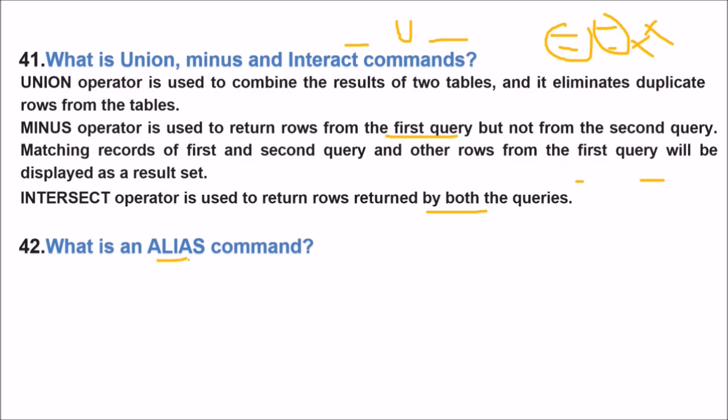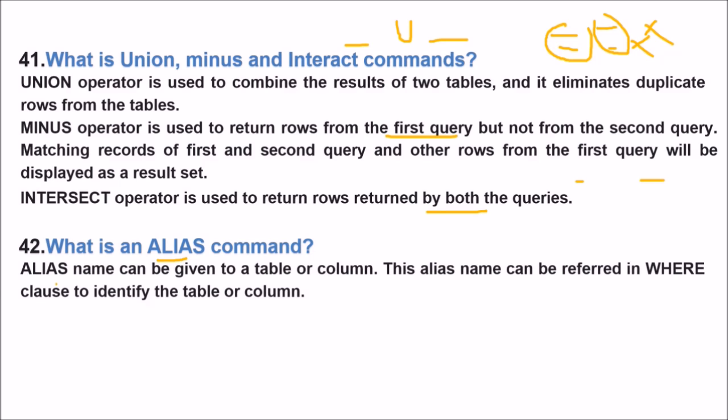What is alias? Alias is multiple naming. Alias name can be given to a table or a column. The alias name can be referred in the WHERE clause to identify a table or a column. So you can use, say if you have a column salary, you can use s.salary. You can compare it with t.salary.